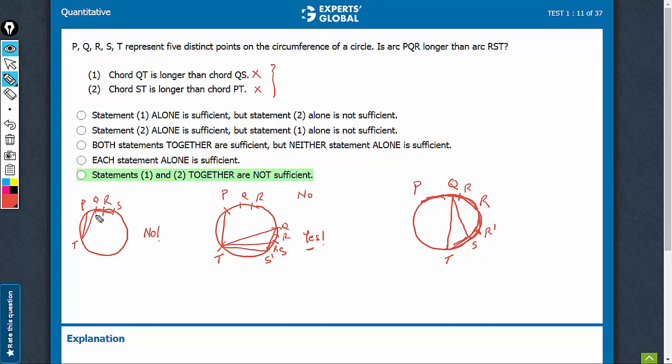QT is longer than QS and ST is longer than PT, so even together it doesn't work. This is a very good data sufficiency question. DS is all about remaining open to all possibilities, exploring and exploiting them. This question teaches you that. It's a difficult question where you have to look at different options. When you do, you'll realize that even after combining, you don't get a unique answer. Therefore, E is the right answer.